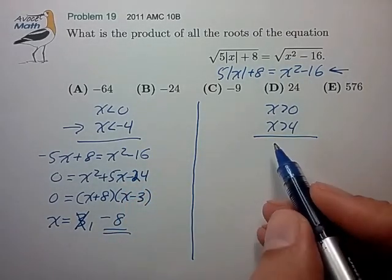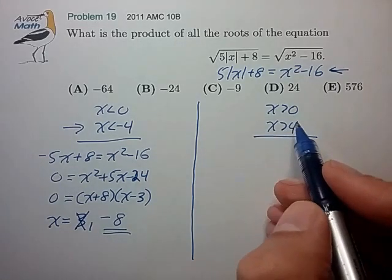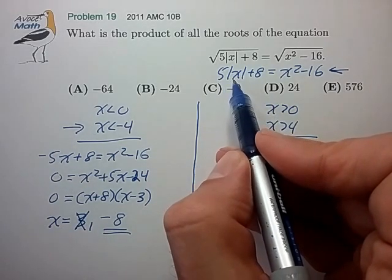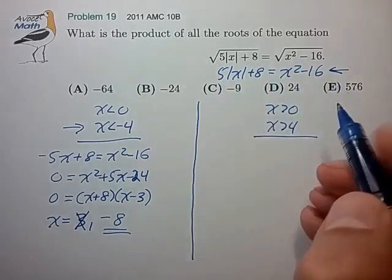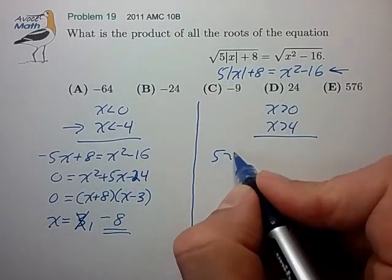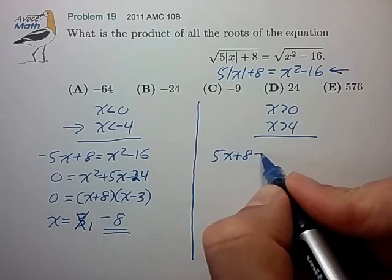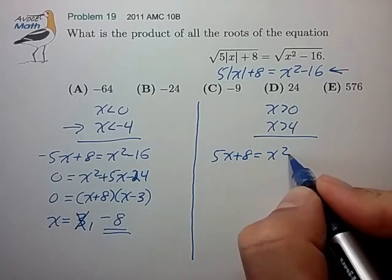Now let's solve the right case. So for x greater than plus 4, we can reduce absolute x to just x, and this equation reduces to 5x plus 8 equals x squared minus 16.